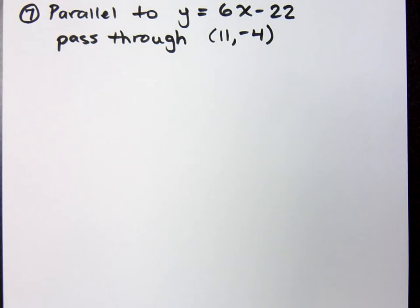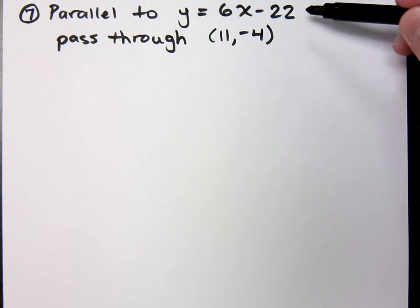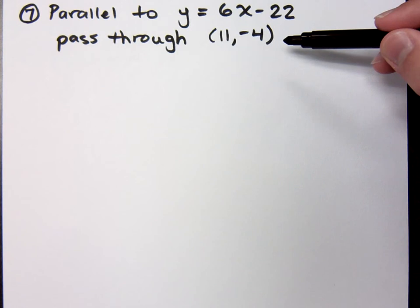All right, let's start today by looking at the seventh problem here. We want to find the equation of a line parallel to y equals 6x minus 22, and it passes through the point (11, -4).